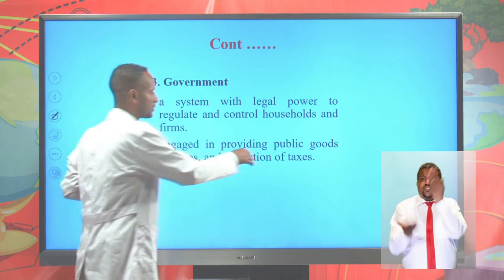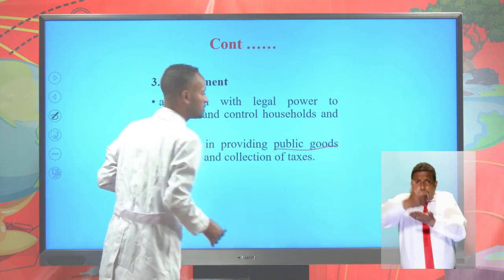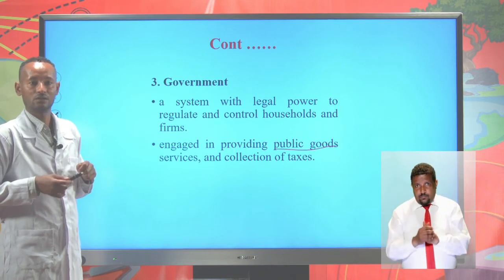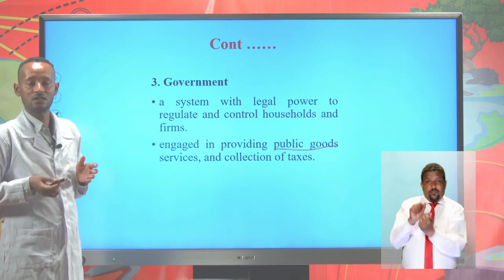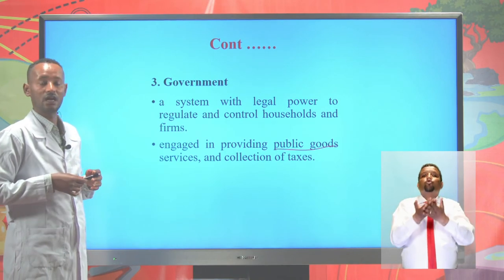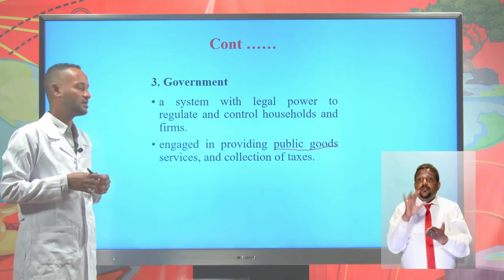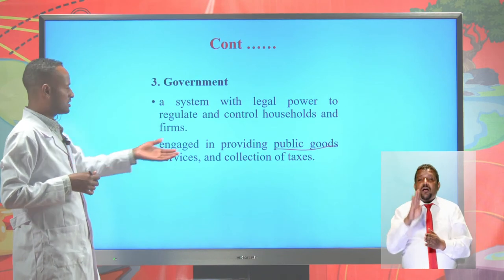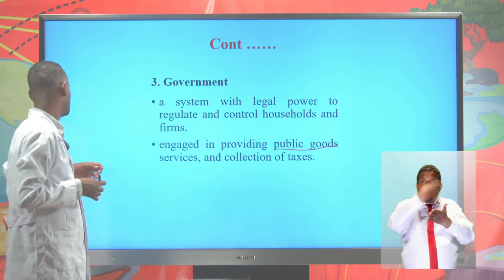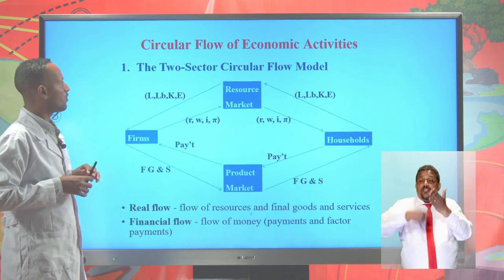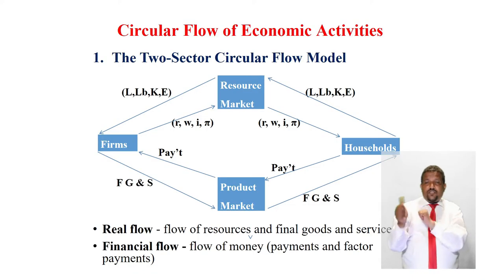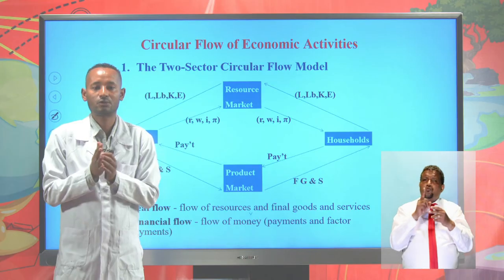Public goods and services are those used collectively where nobody is expected to make individual payments — like schools, health centers, and highways. Government also collects taxes from individuals, households, and businesses. Now let's see the circular flow of economic activities — the two-sector circular flow model and the three-sector circular flow model. Under the two-sector model, households and firms interact in product and resource markets without government, in a closed economy with no imports or exports.